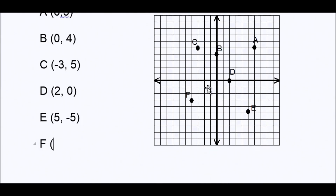Point F. We start at the origin. We went left, which is negative — one, two, three, four. So that's negative four. And then we went down: one, two, three. Down is also negative. And we know that any point in this quadrant, both numbers will be negative — both coordinates.